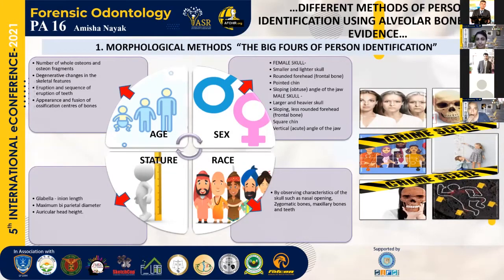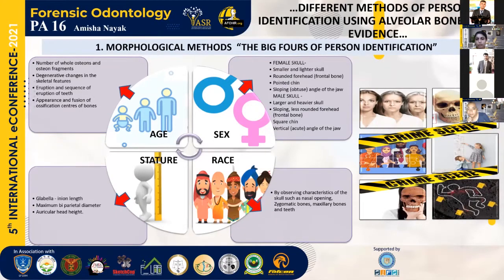Sex is identified by comparison of the male and female skull: the female skull is smaller and lighter with a rounded forehead, pointed chin, and sloping or obtuse angle of the jaw, while the male skull is larger and heavier with a sloping and less rounded forehead, square chin, and vertical angle of the jaw. Race is identified by characteristics of the skull such as nasal openings, zygomatic bones, maxillary bones, and teeth. Stature is identified by the glabello-occipital length, maximum biparietal diameter, and auricular head height.